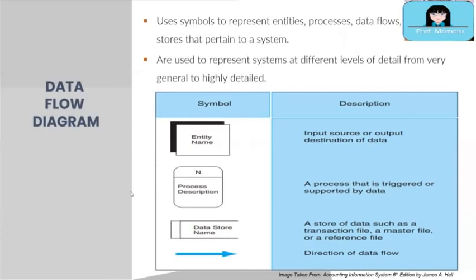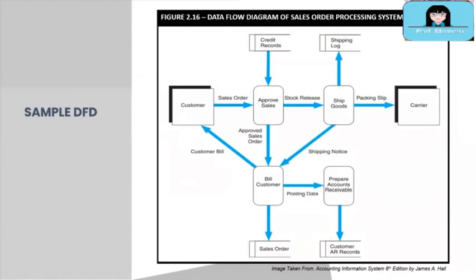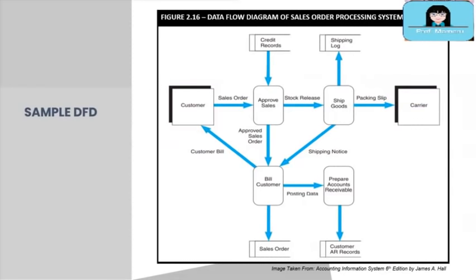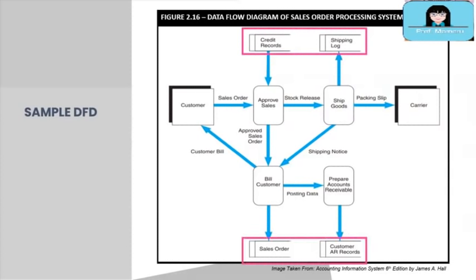To better understand DFDs, let's use the sales order processing system as an example. The screen shows a DFD of the sales order processing system. The customer is the input source of data for order details, and the carrier is the output destination where orders will be shipped. Examples of processes are approve sales and ship goods; other examples are bill customers and prepare accounts receivables. At the top and bottom are the accounting records. The arrows show the direction of process and data flow.